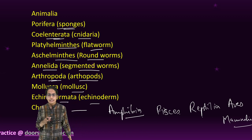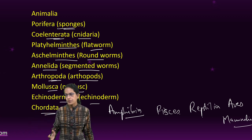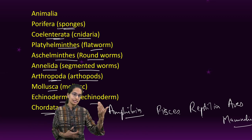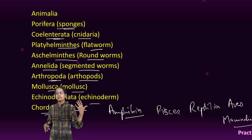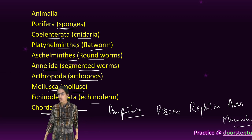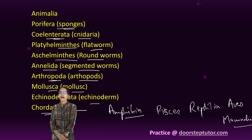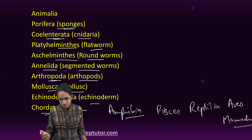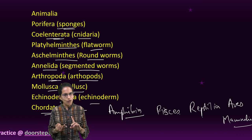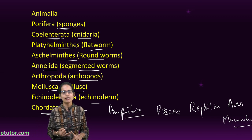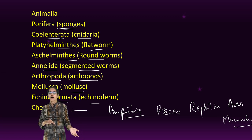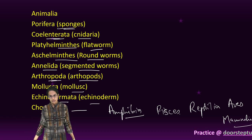Animalia has the maximum number and highest diversity of organisms. Reproduction is mostly sexual. A few animals are parasitic, and others have different modes of food intake. All animals are multicellular and eukaryotic — their nucleus is well defined. Some may live on the body of other eukaryotes in certain cases.